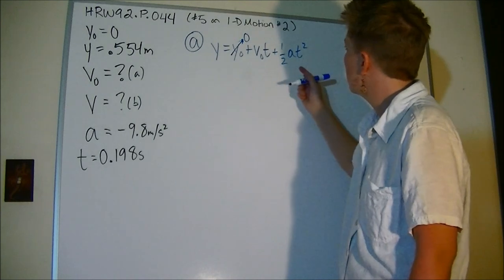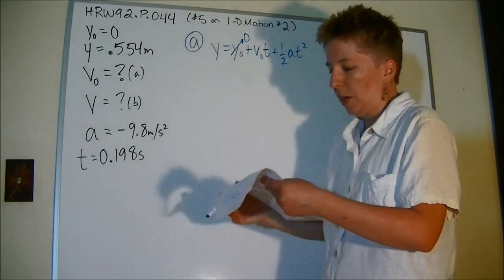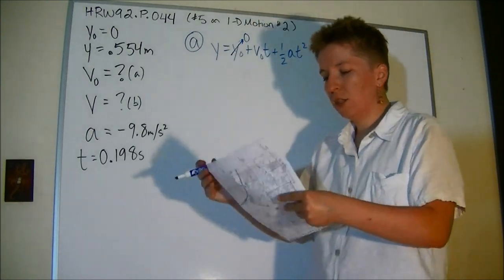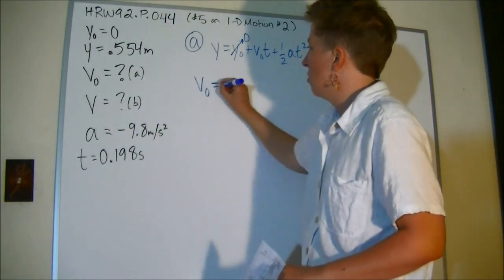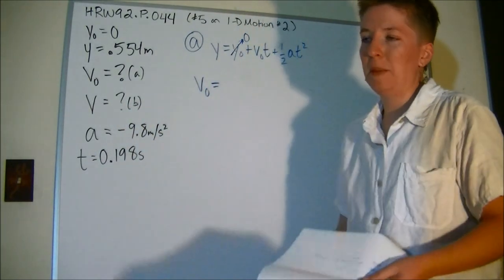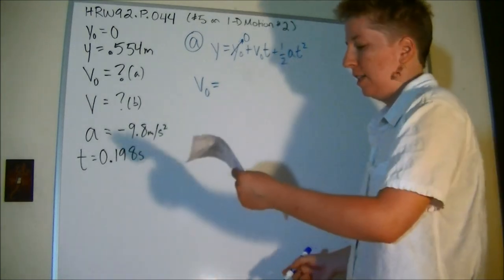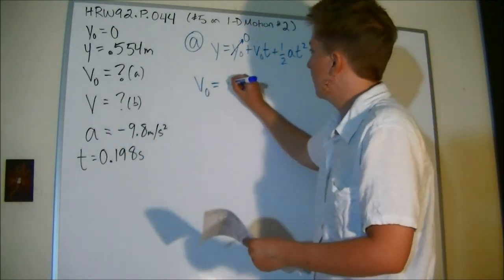Y equals initial position plus initial velocity times time plus one-half a t squared. Luckily for us that's zero. So if I solve that for V naught, I'm not going to do the algebra because it would make the video file too large.